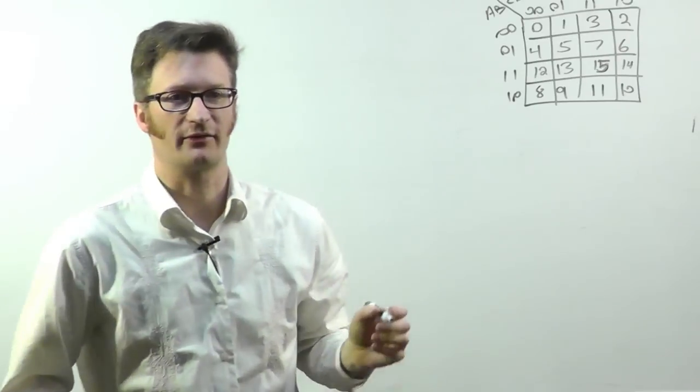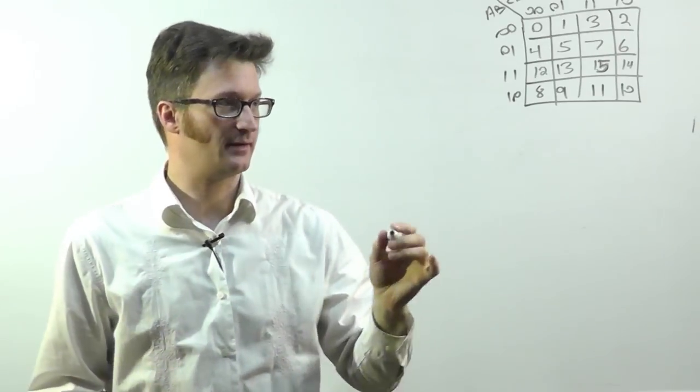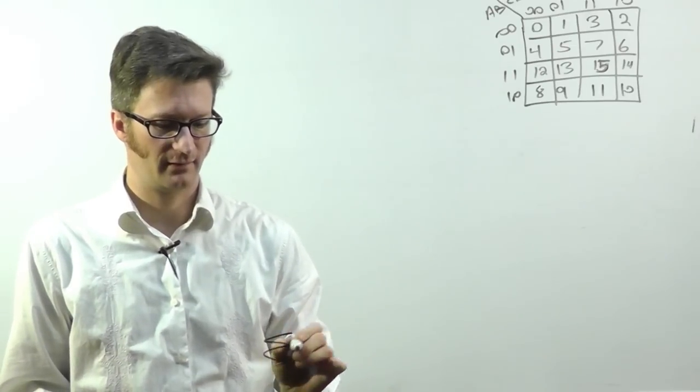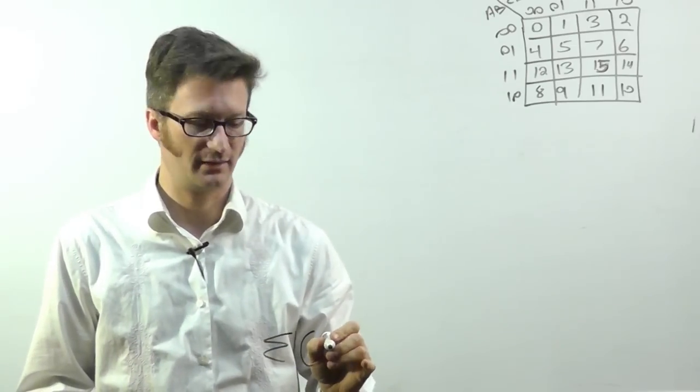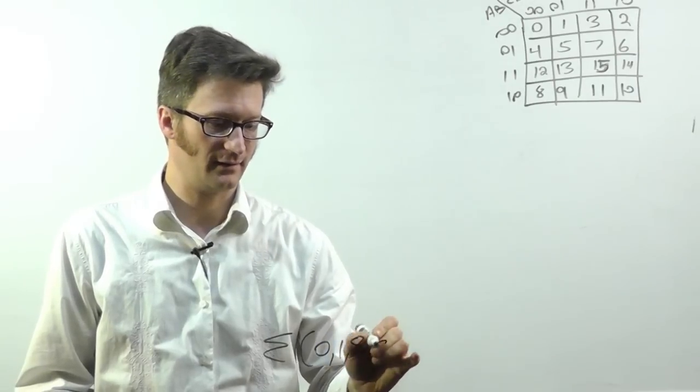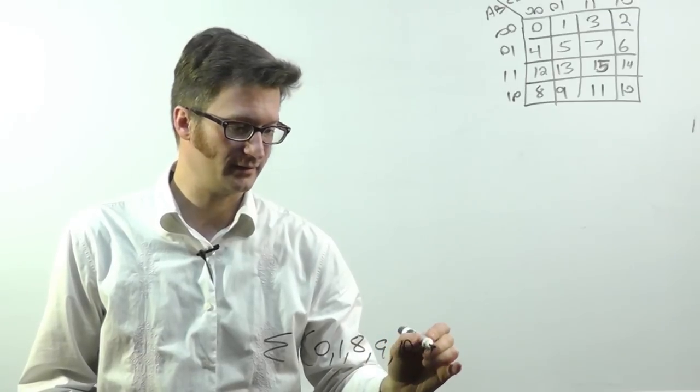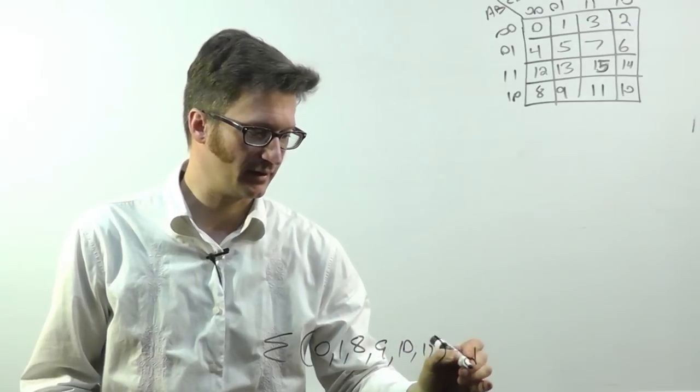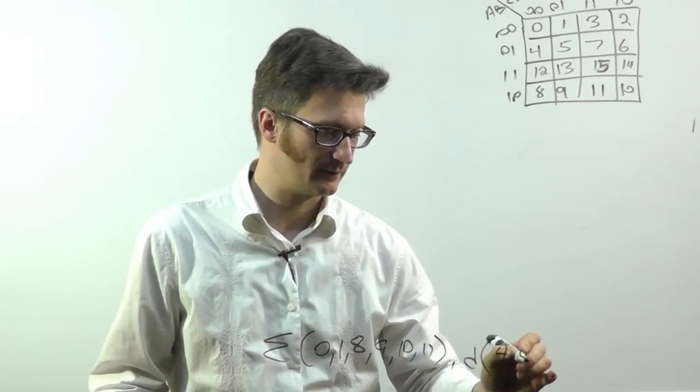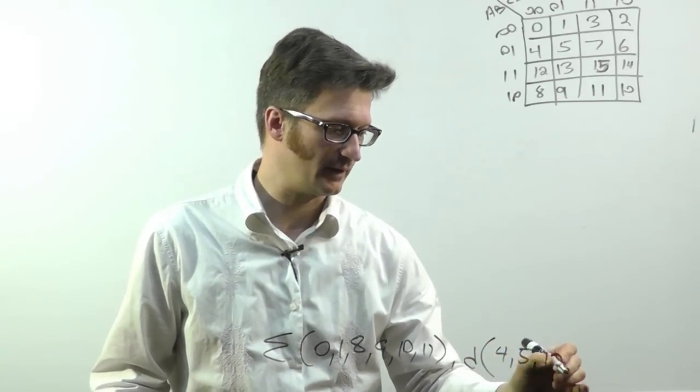Let's take a look at one with don't cares now. What if I have, I'll draw it down here because it's kind of long, the summation of 0, 1, 8, 9, 10, and 11 with don't cares of 4, 5, 12, and 13.